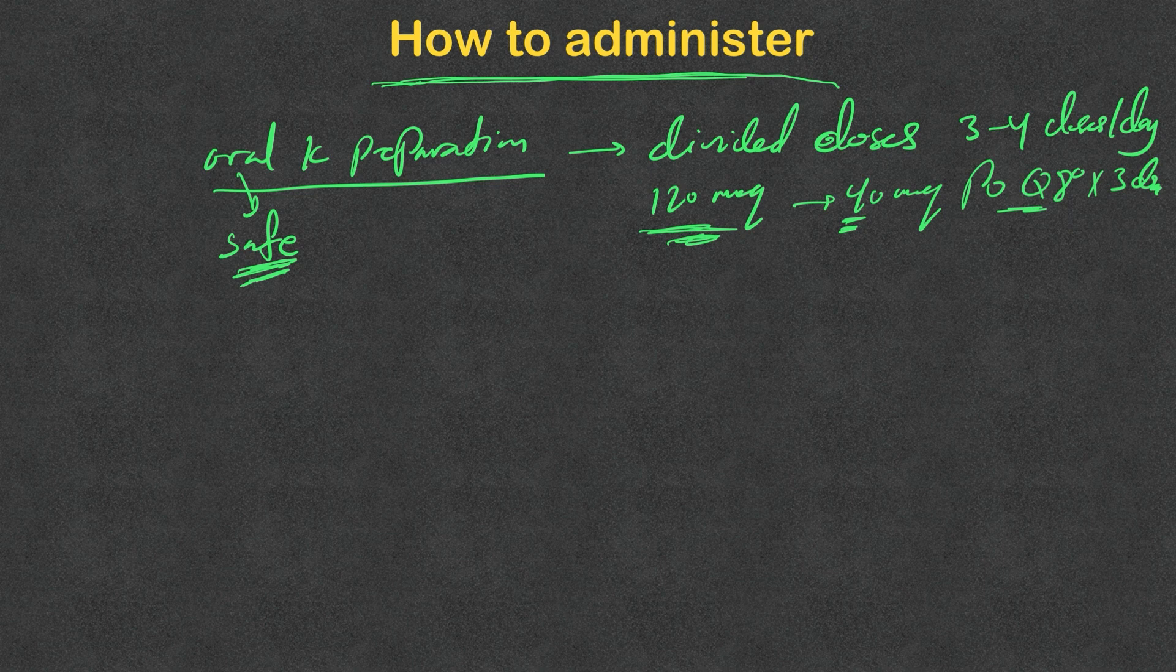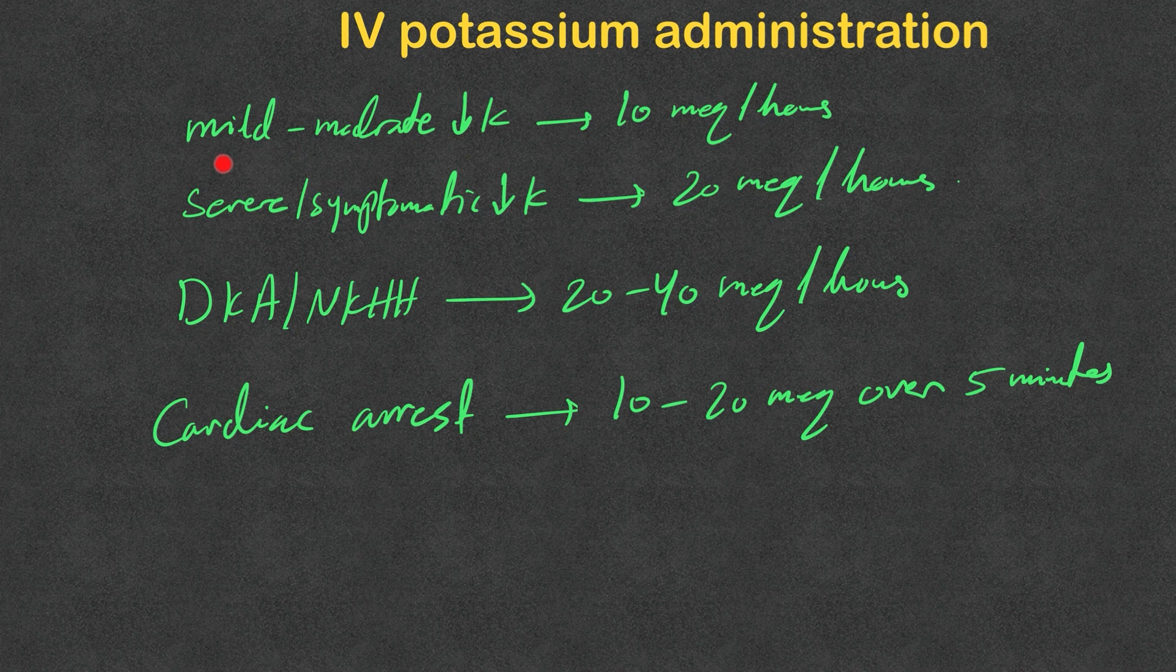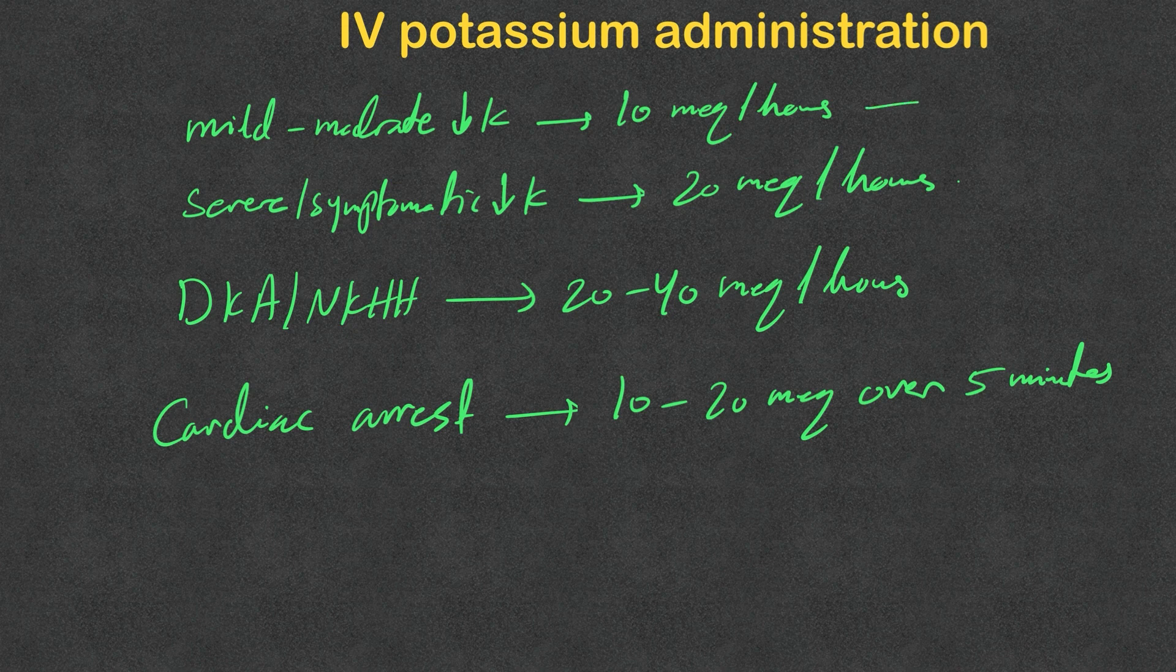Now IV potassium can lead to a quick rise in the serum potassium, and that's why we need to be careful how we give it. If we're using IV potassium to treat mild to moderate hypokalemia, we give it at 10 milliequivalents per hour, and this can be given safely through peripheral IV.